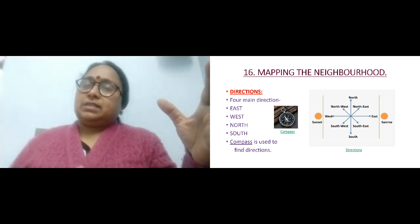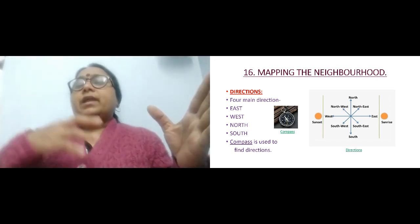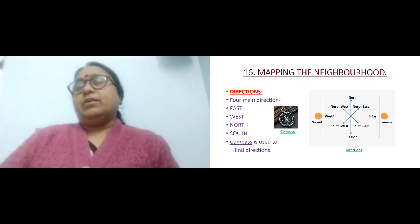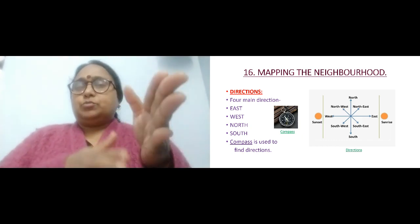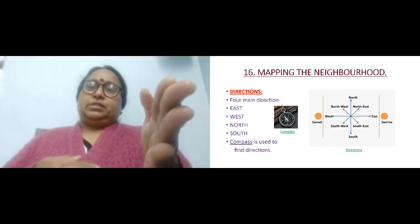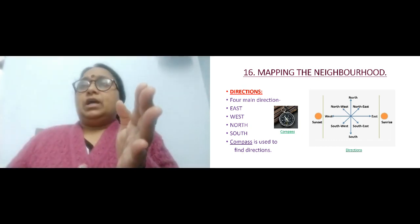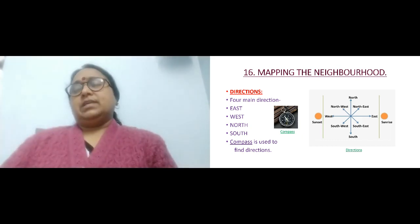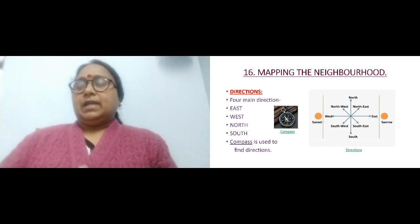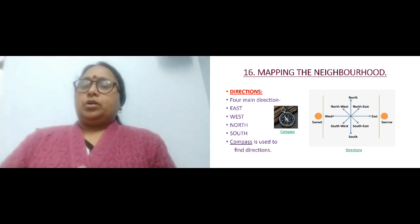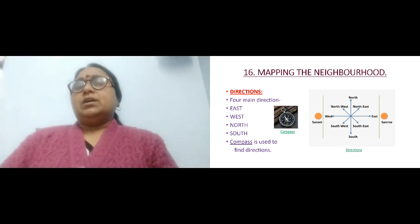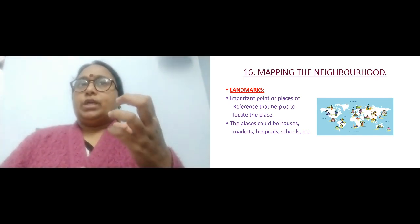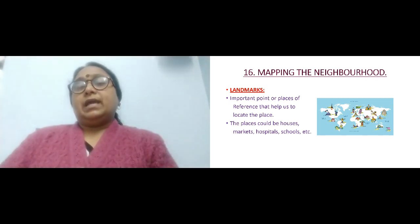When you find north, just opposite to north you have south. On the right side you have east and on the left side you have west. If north is pointed straight, then just opposite is south, to the right is east, and to the left is west. That is how you find direction.